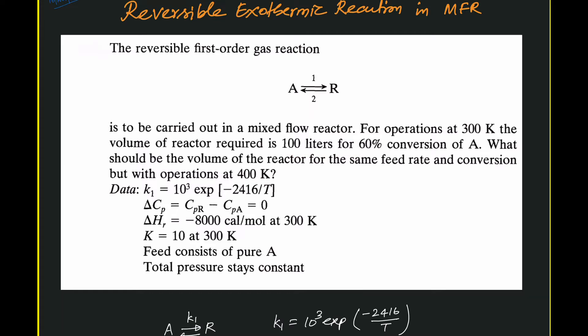Normally, we expect that with an increase in temperature there is an increase in rate of reaction, and thereby we would expect a reduction in volume. But this is not always so, at least for exothermic reversible reactions. Let us see how that comes about.